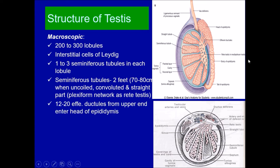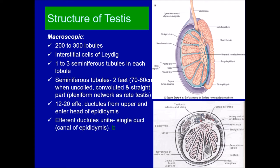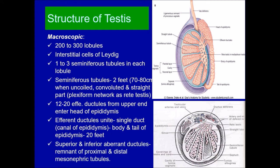From the rete testis, 12 to 20 efferent ductules begin and go to form the head of the epididymis. These join to form a single highly coiled duct — the duct of the epididymis — forming the body and tail, which if stretched is approximately 20 feet. There are also superior and inferior aberrant ductules, which are remnants of the mesonephric (Wolffian) duct.